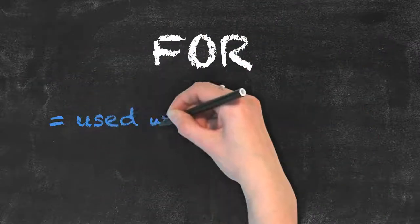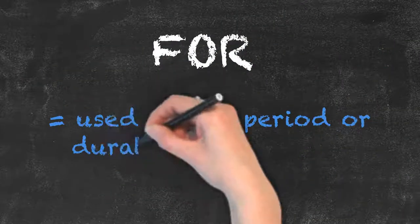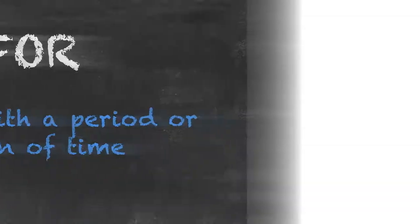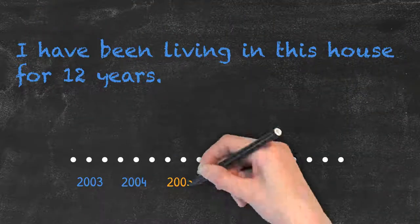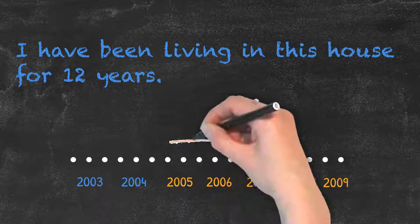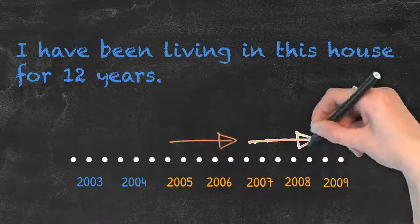For, however, is used with a period or duration of time, such as in this example. I have been living in this house for 12 years. 12 years is a duration of time and therefore we need to use for.